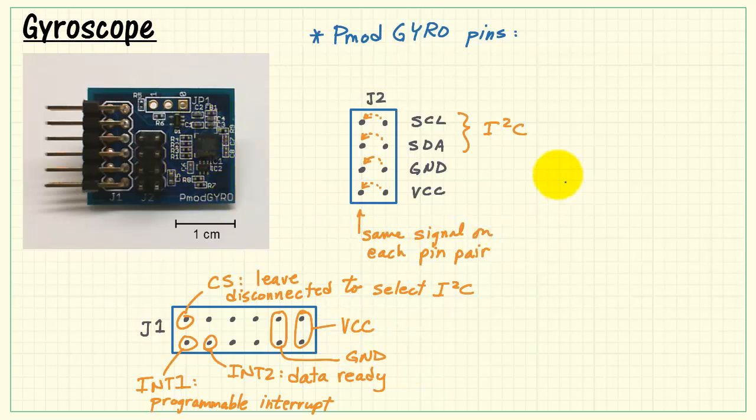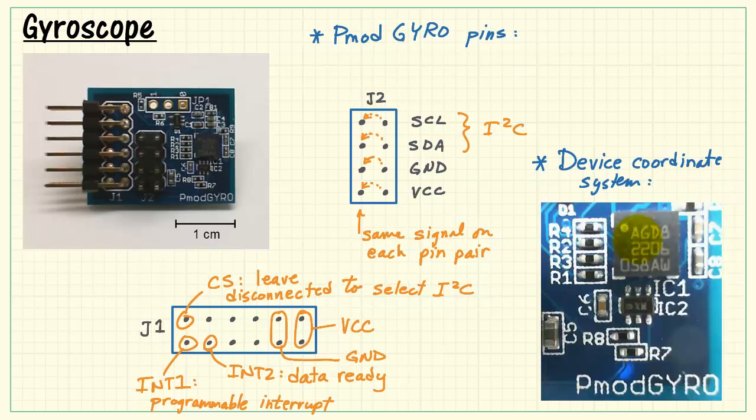Let's take a closer look at the accelerometer mounted on the board so we can see its device coordinate system. Look for the pin 1 indicator right there. You have X, Y, and Z is pointing out the top of the board.